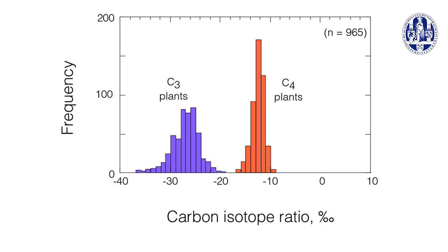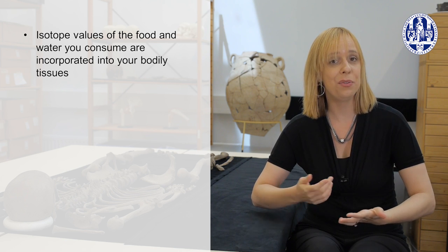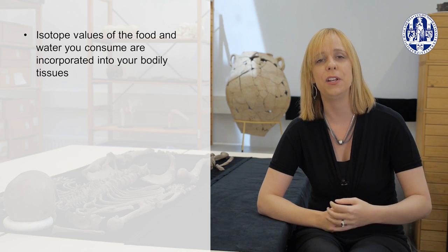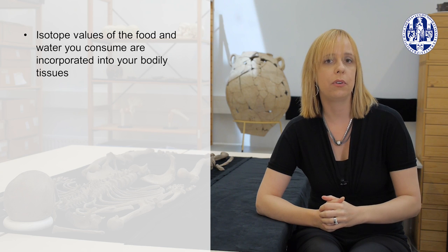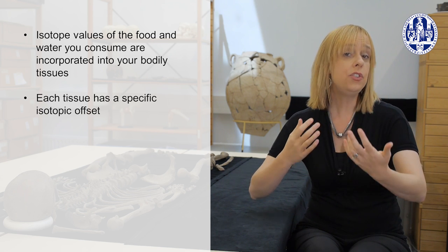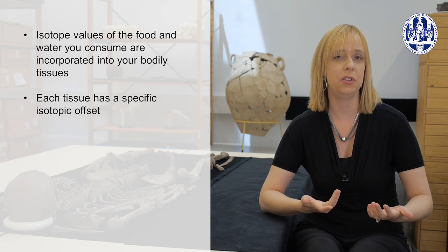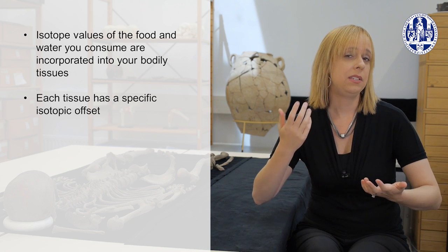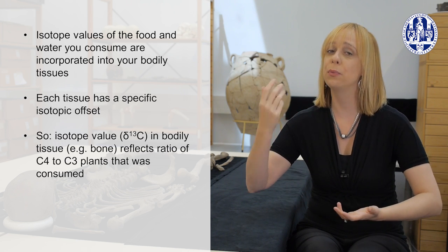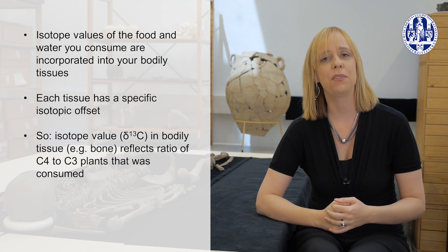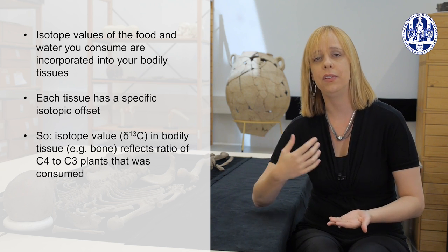The next step then is the demonstration that the stable isotope values of the food that you eat becomes incorporated into your bodily tissues, into your bones and teeth, which is what we usually analyze in archaeology, but also into your hair and fingernails, skin and muscles, tissues that might be analyzed in living people or from recent forensic contexts. Each tissue will have its own offset, the difference between the stable isotope value of the food and the ratio that gets incorporated into the tissue, but this can be studied in different species and once known, taken into account. So the amount of C4 plant food relative to C3 plant food that you eat is reflected in the ratio of carbon-12 to carbon-13 that we measure in your body, whether from someone living today or someone living many thousands of years ago.